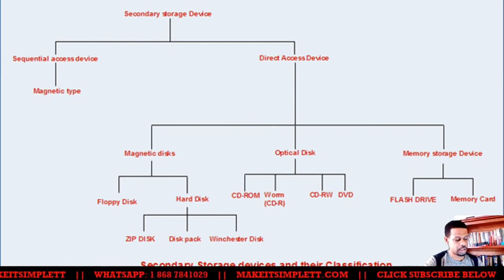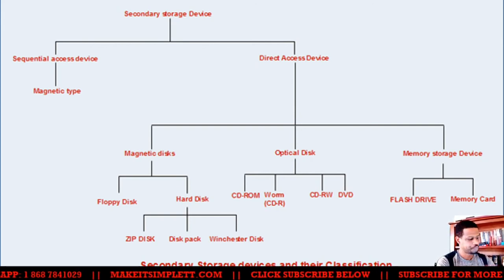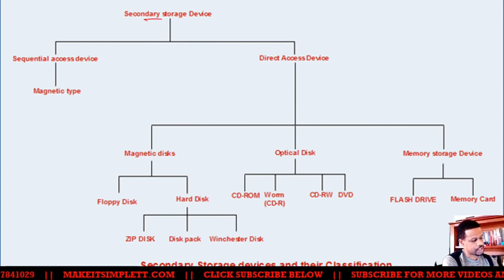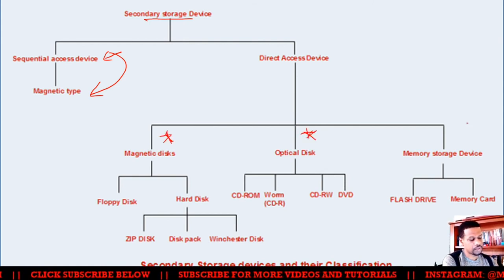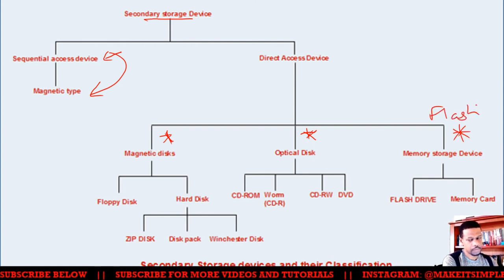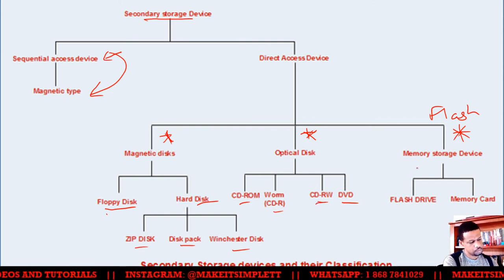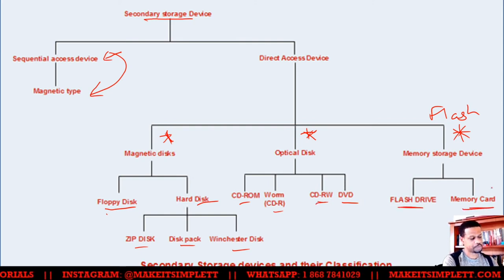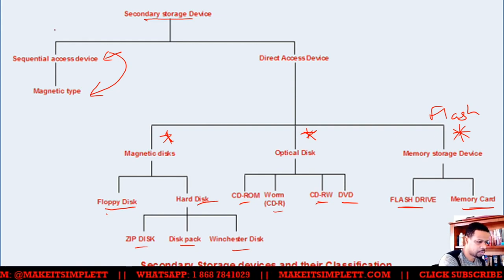The whole storage classification diagram is here. You start with secondary storage devices — you could have sequential, which leads you to magnetic tape, or direct, which gives you magnetic disks, optical disks, or flash memory storage. Magnetic disks break out into floppy disks and hard disks. Optical disks include CD-ROM, CD-RW, and DVD. Flash memory includes flash drives and memory cards. As time progressed, we moved from the sequential/magnetic side more toward the flash side of storage.